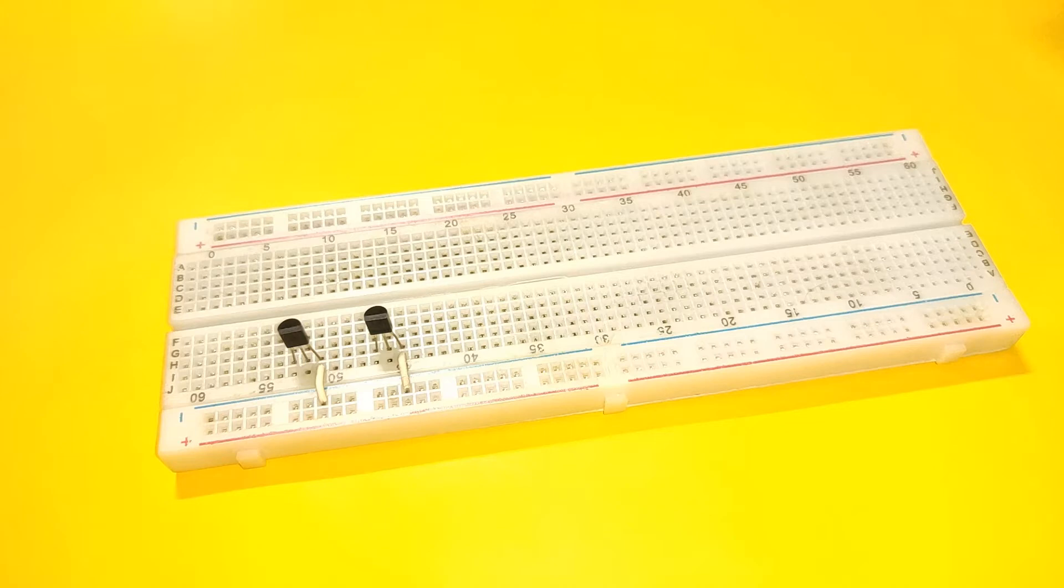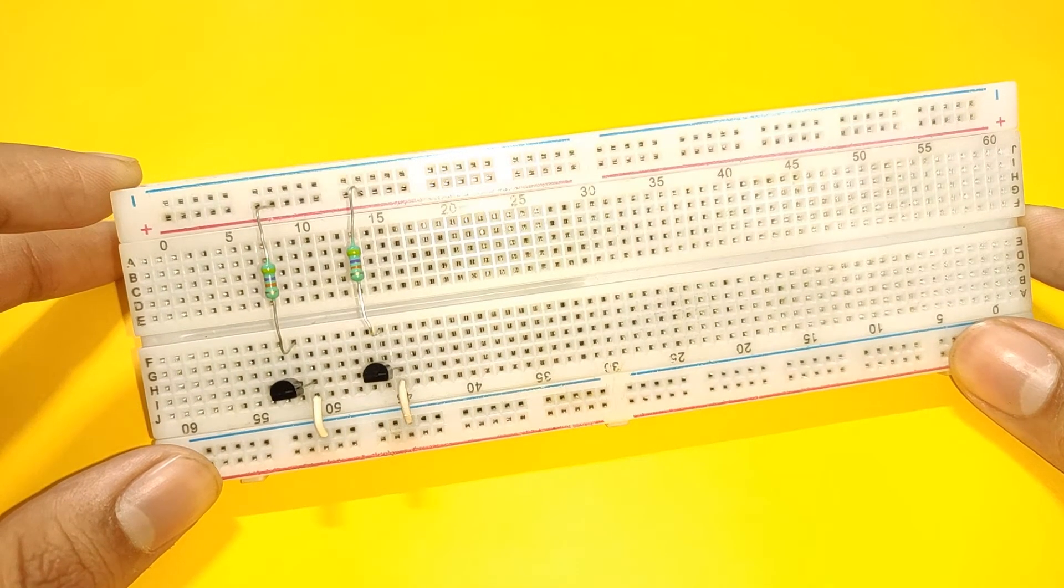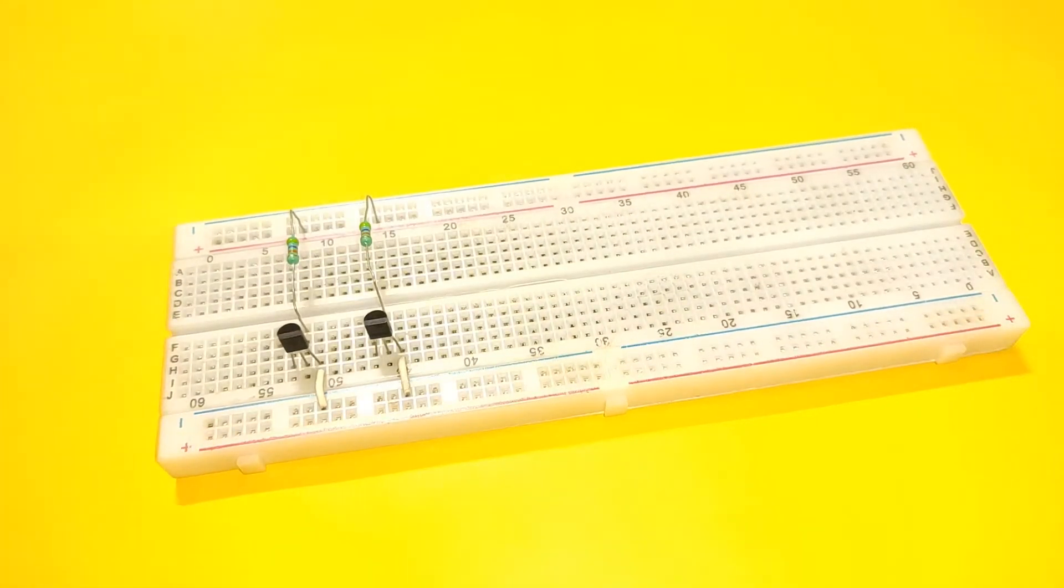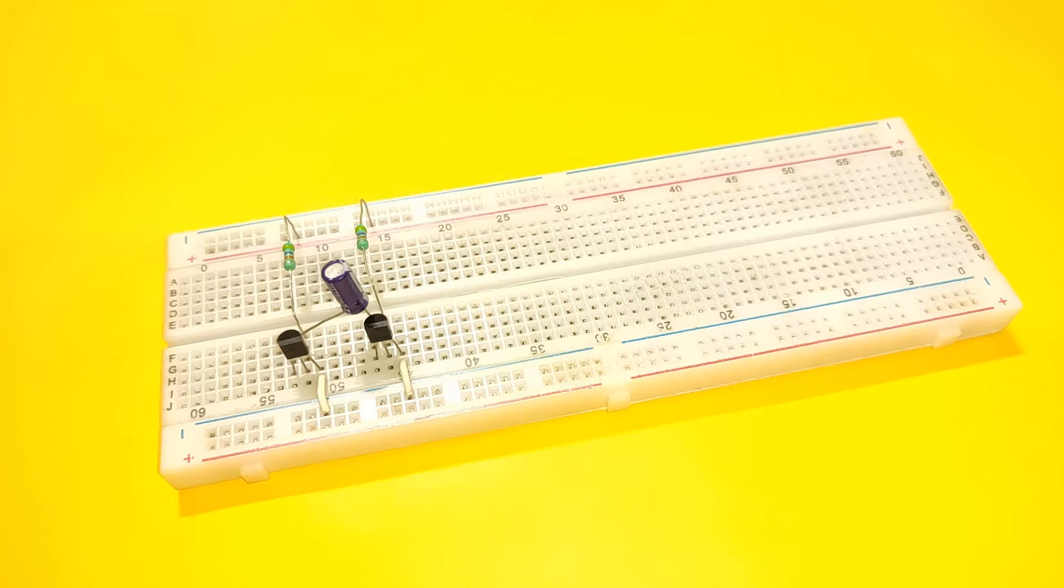Then place two 47k resistors between the positive rail and base of each of the transistor. Now place a 10 microfarad capacitor with its positive lead connected to collector of first transistor and negative lead connected to base of second transistor.